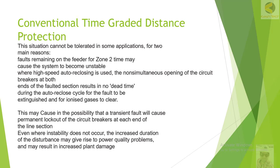The first reason is that a fault remaining on the feeder for Zone 2 time may cause the system to become unstable — because of a large fault current causing a power swing, which may result in tripping of breakers elsewhere. The second reason is that where high-speed auto-reclosing is used, the non-simultaneous opening of breakers at both ends of the faulted section results in no dead time during the auto-reclose cycle for the fault arc to be extinguished and ionized gases to clear. This may cause a transient fault to result in permanent lockout of the circuit breakers.